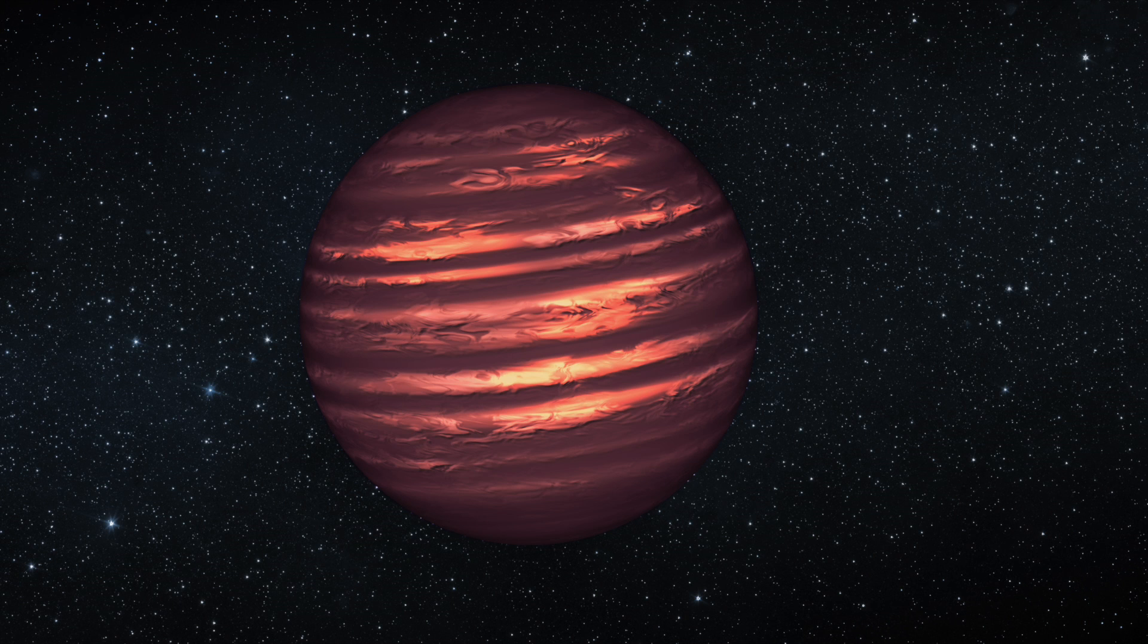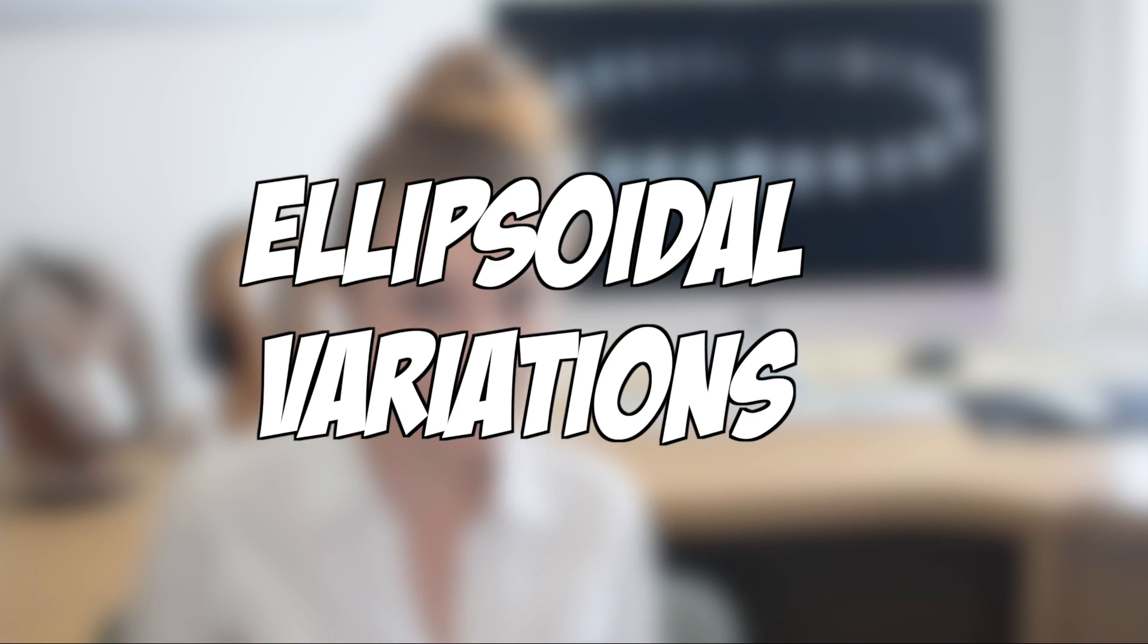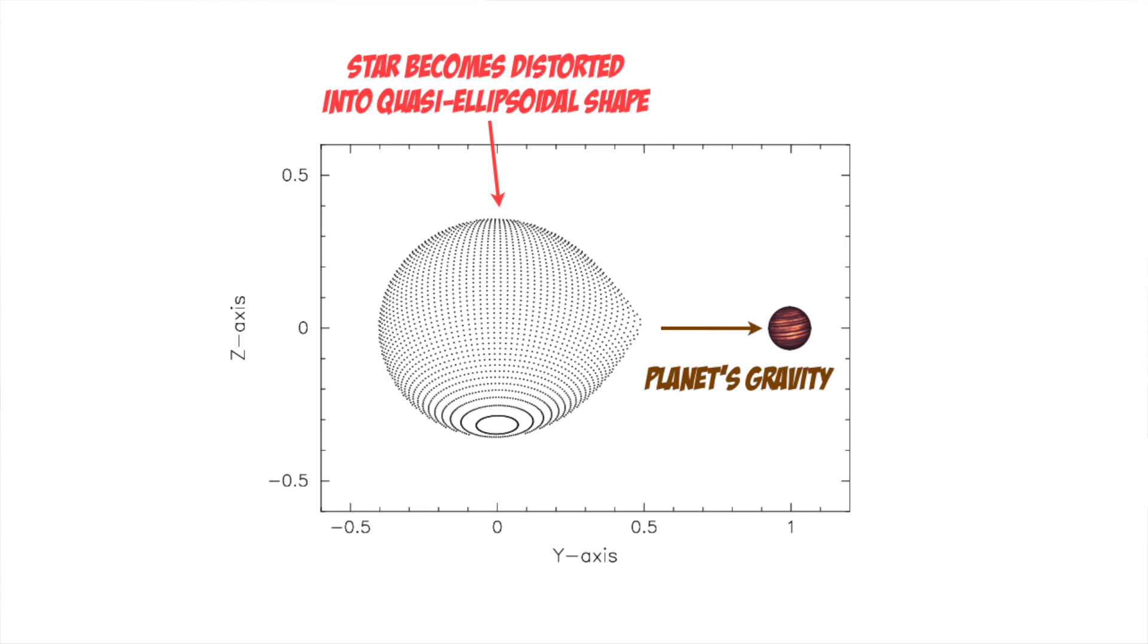Now, if the planet is massive enough, there can be other effects. One of these effects is called ellipsoidal variations. Because the planet has mass, it gravitationally interacts with its star. If it's massive enough, it can tidally distort the shape of the star from a sphere to an ellipsoid.